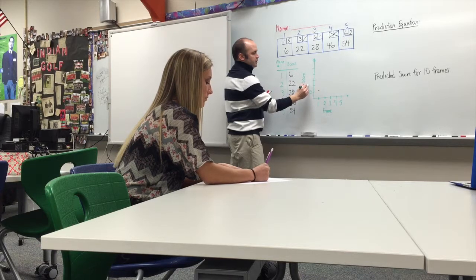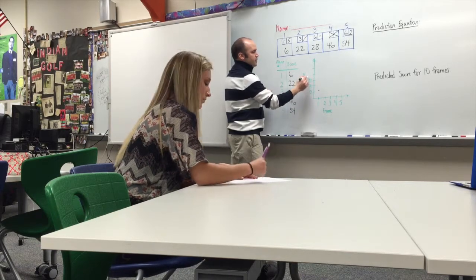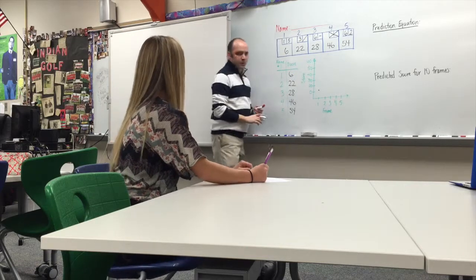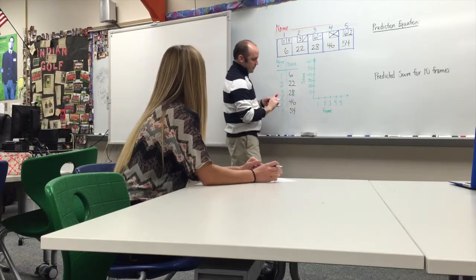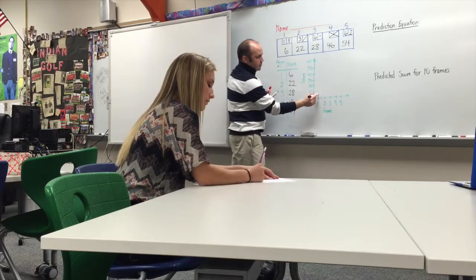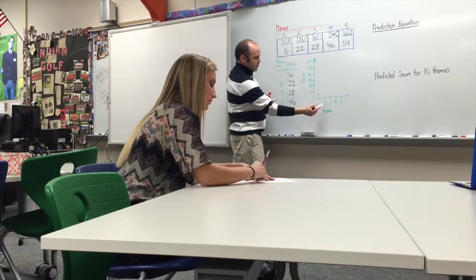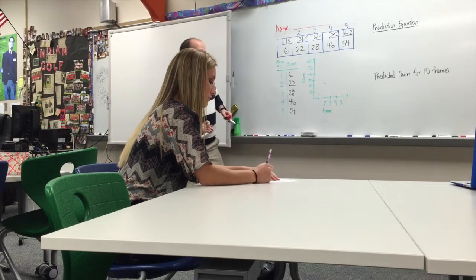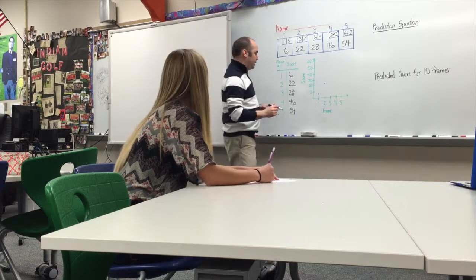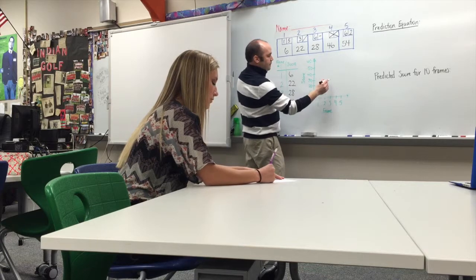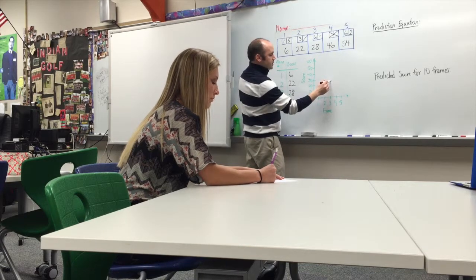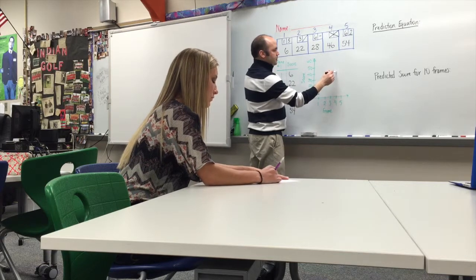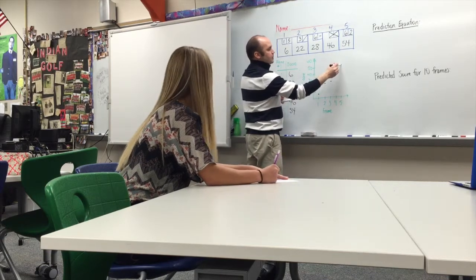So we'll go by tens: 10, 20, 30, 40, 50, 60. We're going to plot all of our points again. So over one up six, be about here. Over two up 22. Over three up 28, it's going to be a little above your 22. Over four up 46, you're going to be here. And then over five up 54, that's going to be about here.